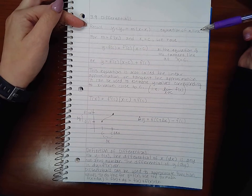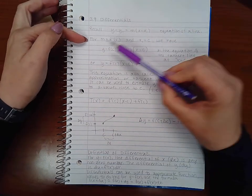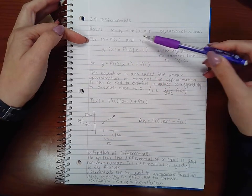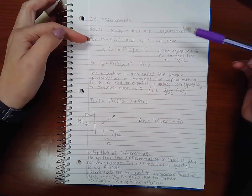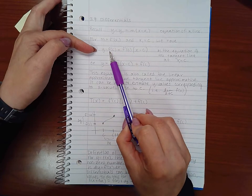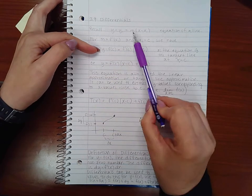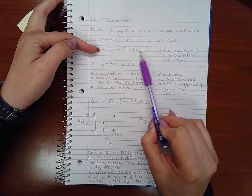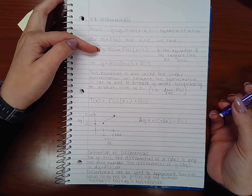Then what you have is that this y1 is f of c, the m is f prime of c, and then the x1 is c. So in the parentheses you have x minus c, and this is the equation of the tangent line at x1 equal to c.